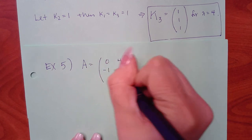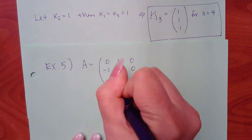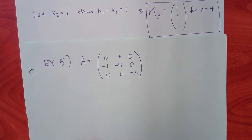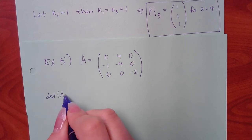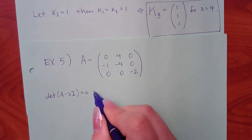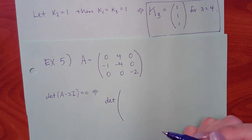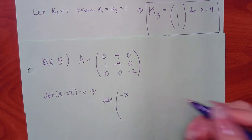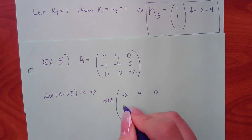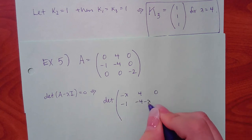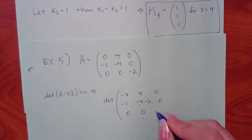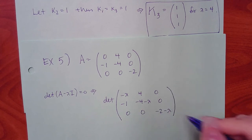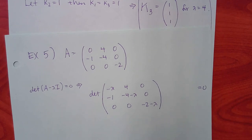This 3×3 matrix has many zeros to simplify the work. Computing det(A minus lambda I) equals zero: diagonal entries get minus lambda — so 0 minus lambda is just negative lambda; negative 4 minus lambda; negative 2 minus lambda. Off-diagonal entries stay unchanged.